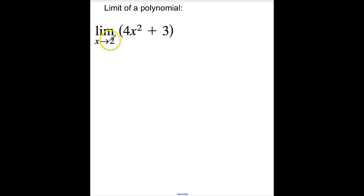Let's look at this one. The limit as x approaches 2 of 4x² + 3. You remember this is polynomial, so we can just evaluate it at the point. So this is 4 times 4, which is 16 plus 3, or 19.